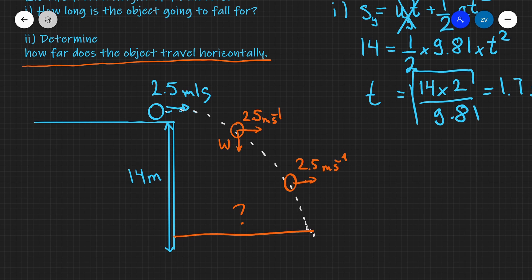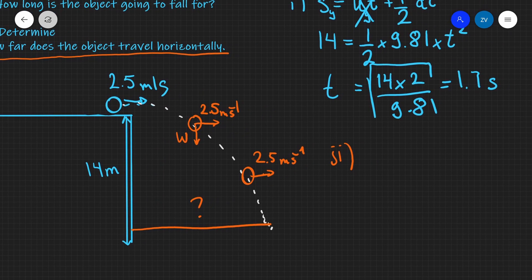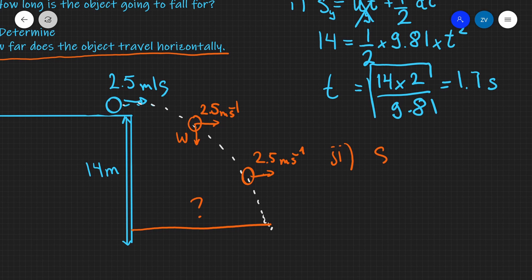So we can work out the horizontal distance traveled by simply multiplying the horizontal velocity multiplied by the time of flight which we already have.